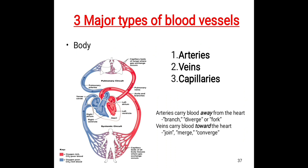Arteries are those blood vessels that carry oxygenated blood from the heart to different parts of the body, except the pulmonary artery. The pulmonary artery is an exception because it carries deoxygenated blood from the right ventricle toward the lungs for oxygenation. All other arteries carry oxygenated blood from the heart toward different parts of the body.